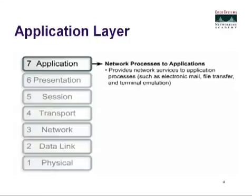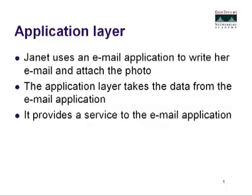The first part is the application layer. This provides network services to application processes such as electronic mail, file transfer, and terminal emulation. Janet uses an email application to write her email and attach the photo. The application layer takes the data from the email application and provides a service to it — the email application might be Hotmail or Outlook. Basically at the application layer, we're determining what application we're using.